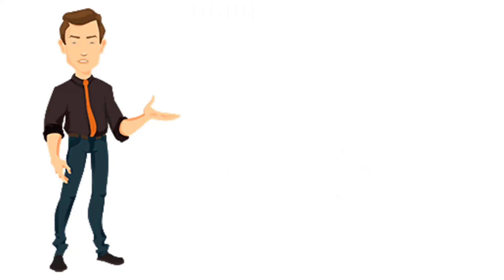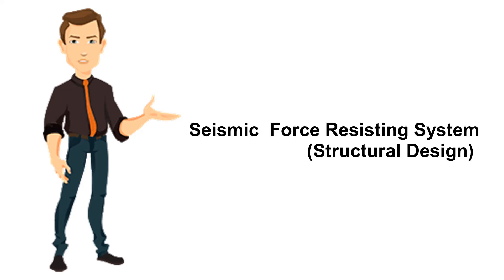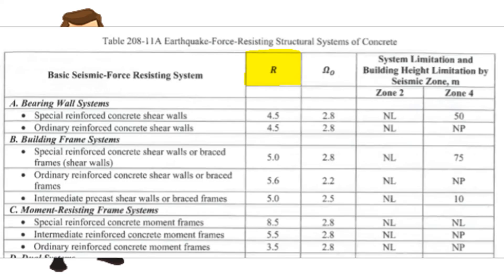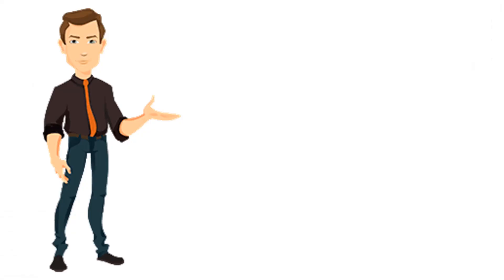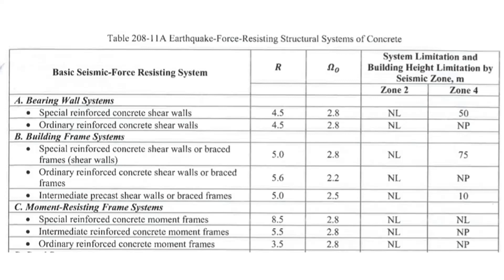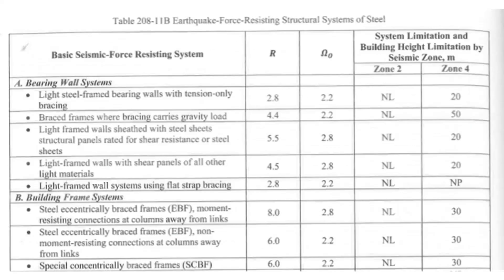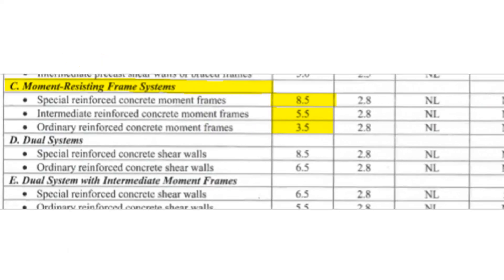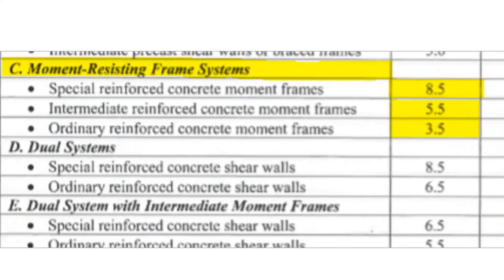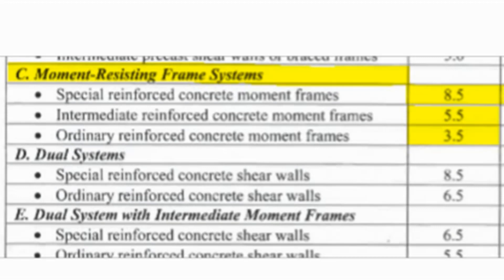The closest distance to a known seismic source can be identified using a fault finder application or website from DOST. After that, identify the seismic force resisting system or type of frame used in your structure, to determine the numerical coefficient R, found in Table 208-11A. For steel, the most common frame is the moment resisting frame system, with R = 8.5 for special reinforced concrete moment frames, 5.5 for intermediate, and 3.5 for ordinary reinforced concrete moment frames.